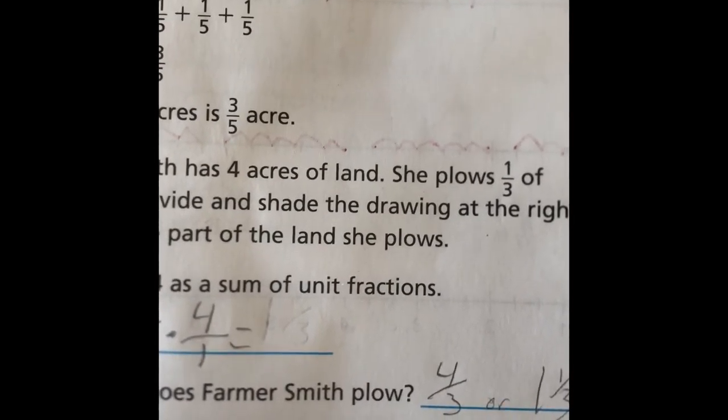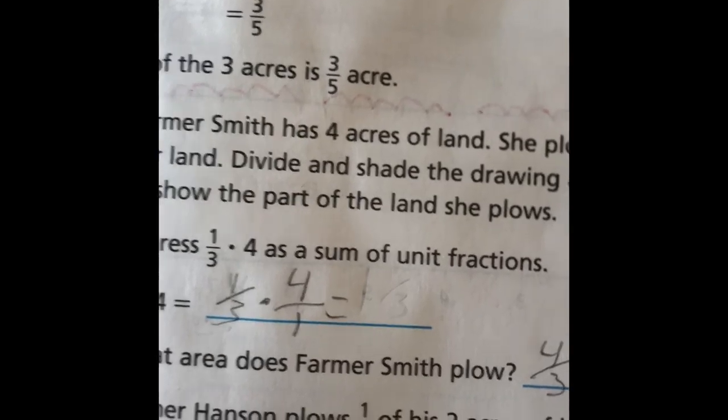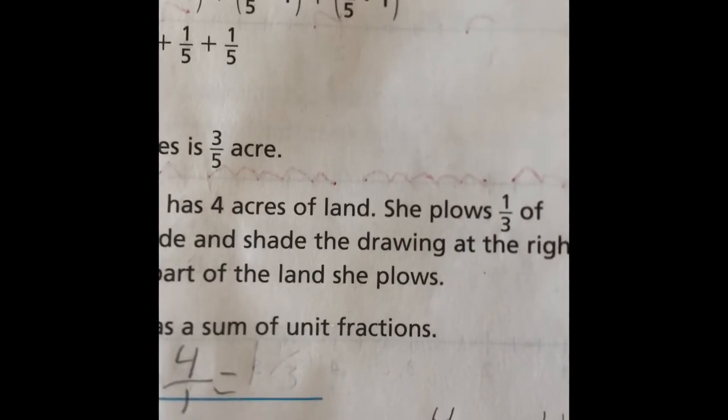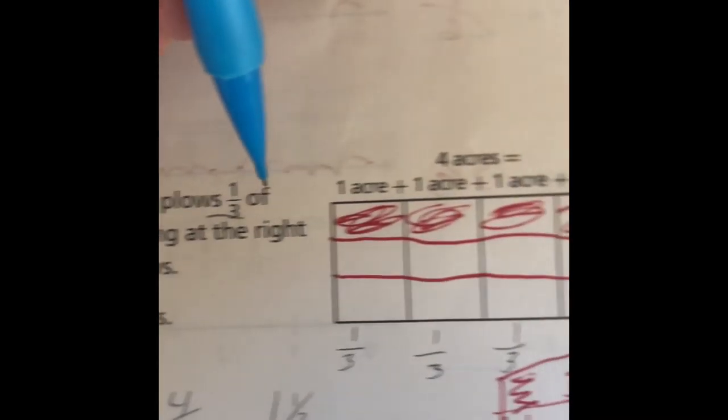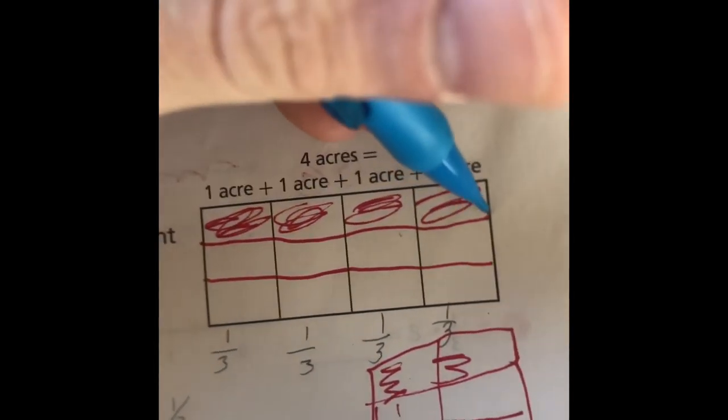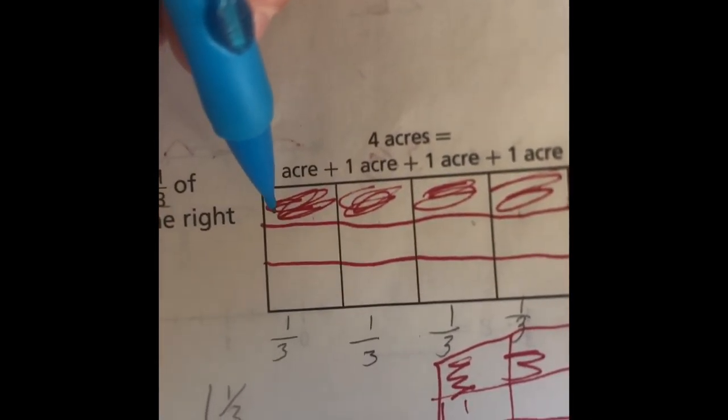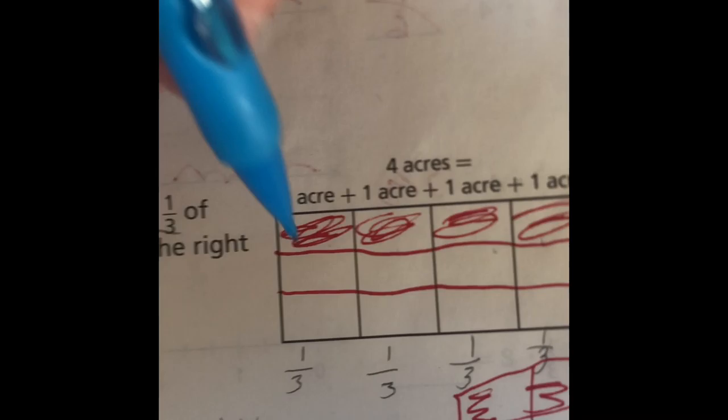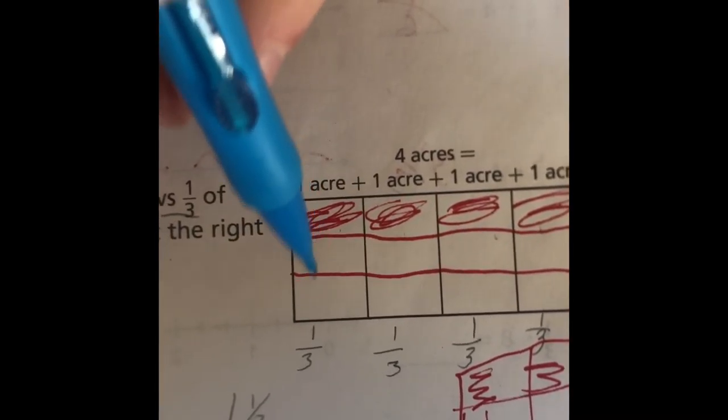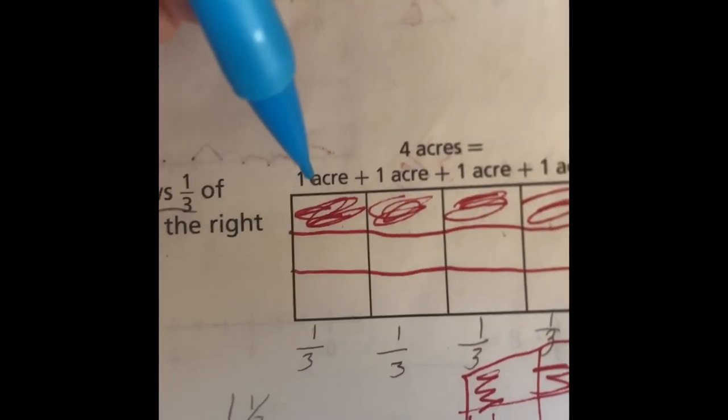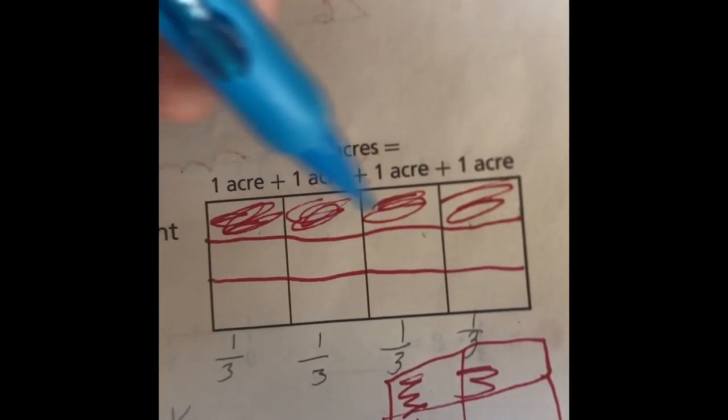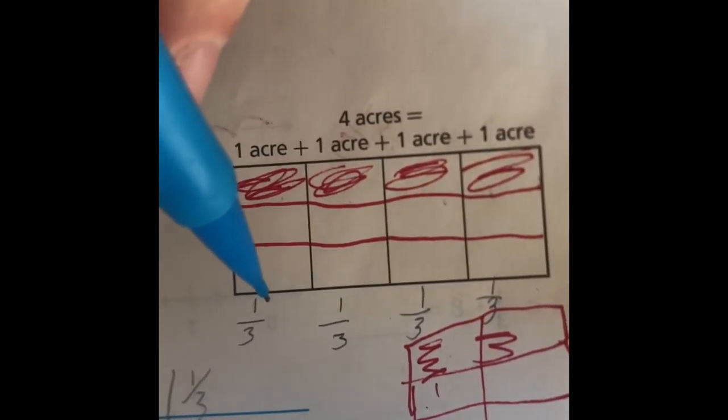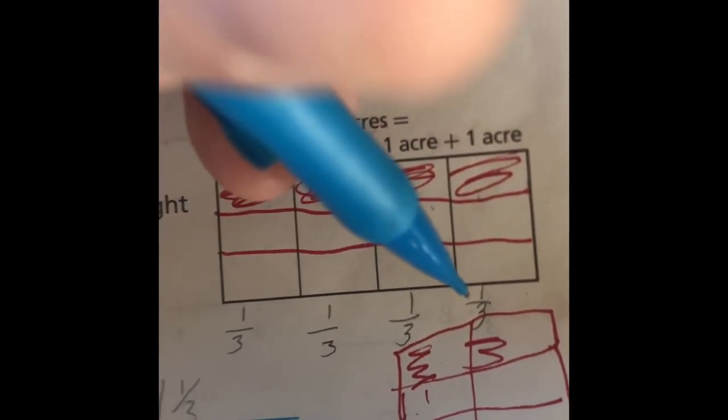The setup for this problem is the same exact as last time. It's even about acres and land. The first thing we need to do is find our values. We know it's four acres, and we know they do a third. They've already divided it into four different acres, which is the same as last time. What we need to figure out is how many lines go in each, or how many boxes make one full acre. For this problem, it's a third. So we should divide each box, or each acre, into three different parts. Since we're taking a third of each acre, we'll shade one-third of the boxes, which gives us one-third plus one-third plus one-third plus one-third, which is four-thirds.